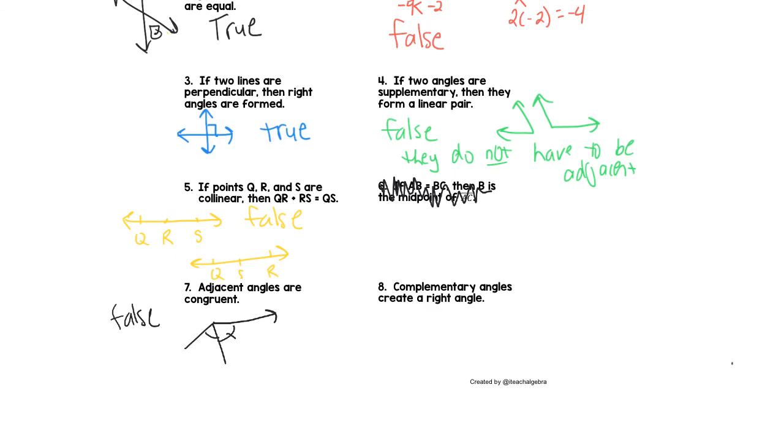Last but not least, complementary angles create a right angle. This is going to be false because they do not have to be adjacent. So they can look like that and have a gap in here that separates them. So they equal 90 degrees, but they don't make a right angle because they're not adjacent angles.